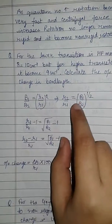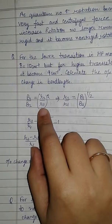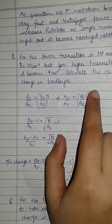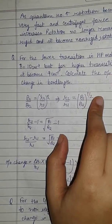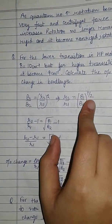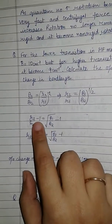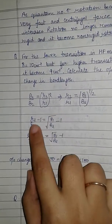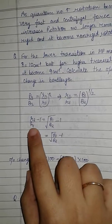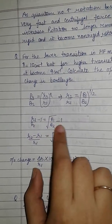Since the rotational constant is inversely proportional to the square of the bond length, from this formula we get R₂/R₁ = √(B₁/B₂). The power of one-half is taken, giving us the square root of B₁ over B₂.